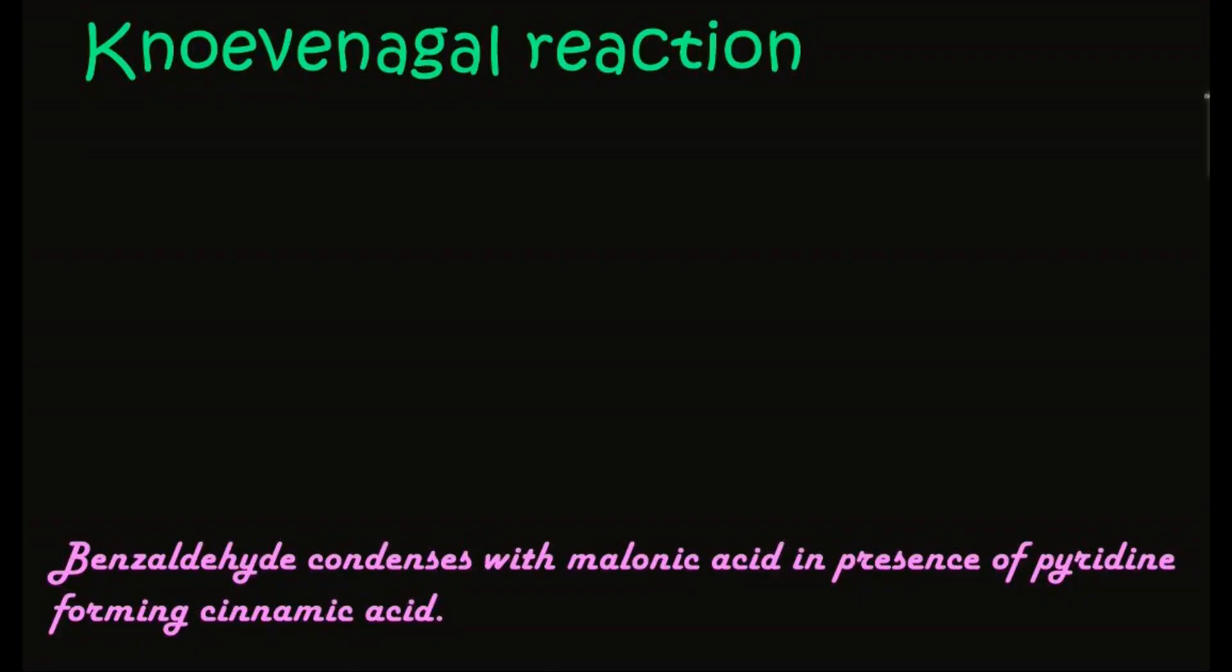In this video, we're going to learn about the Knoevenagal reaction. We're going to prepare cinnamic acid from benzaldehyde. Let's write the reaction: C6H5-CH=O. This is benzaldehyde.